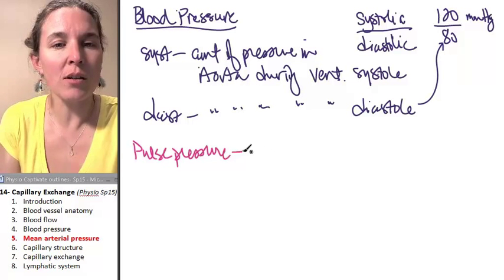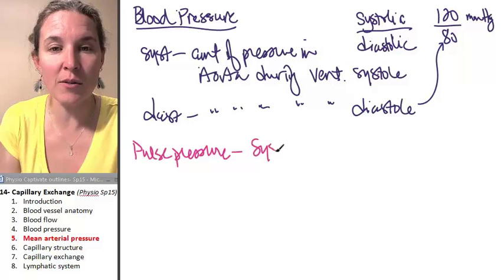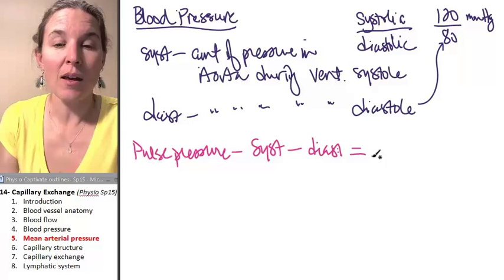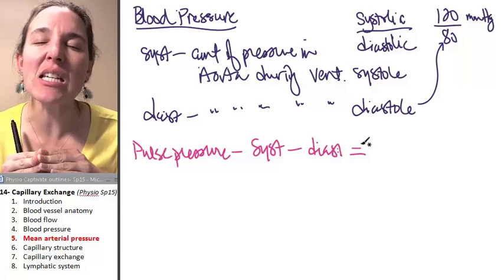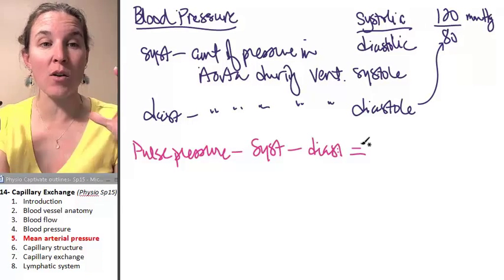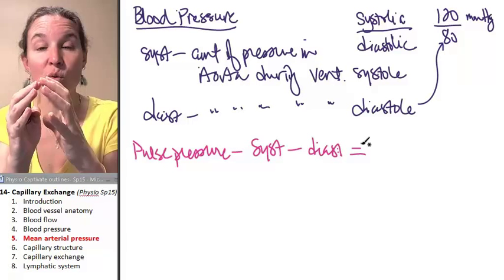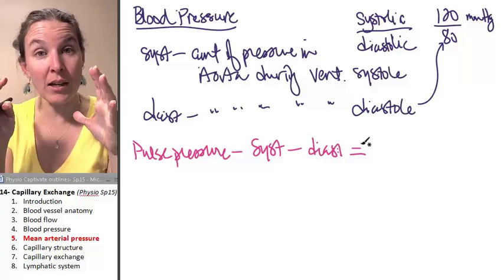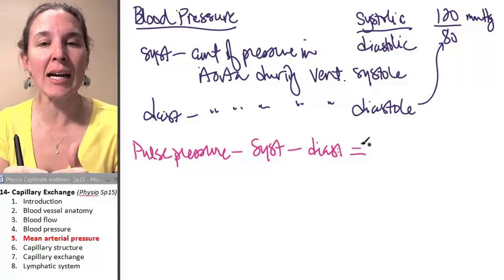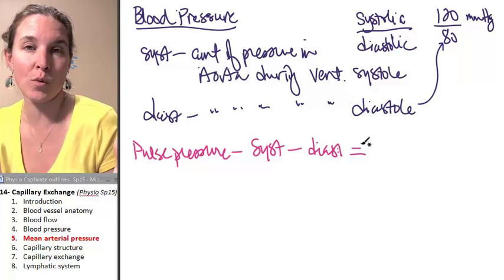Pulse pressure is essentially the systolic pressure minus diastolic, and it's significant because the difference between those can give you information about the compliance of your vessels. If your vessels do not stretch well enough or are abnormally unstretchy, then you're going to have a pulse pressure that's out of normal range.